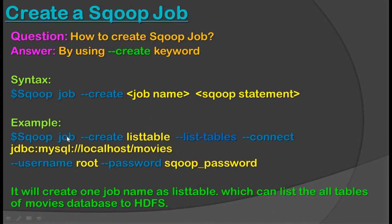In this example, we create a Sqoop job using: sqoop job --create list_table --list-tables --connect jdbc:mysql://localhost/movies --username root --password sqoop_password. The part from '--list-tables' through '--password' is the Sqoop statement, and 'list_table' is the job name.